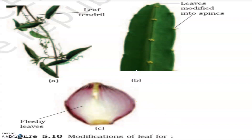Modifications of leaf. Leaves are often modified to perform functions other than photosynthesis. They are converted into tendrils for climbing as in peas, or into spines for defense. The fleshy leaves of onion or garlic store food. In some plants such as Australian Acacia, the leaves are small and short-lived, and the petioles expand and become green, synthesizing food — these are called phyllodes. Leaves of certain insectivorous plants such as the pitcher plant and Venus flytrap are also modified leaves.